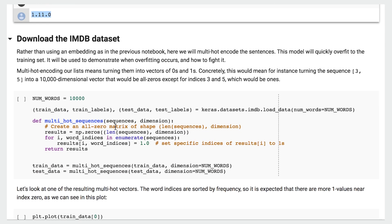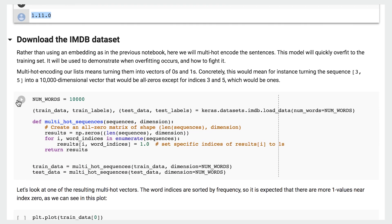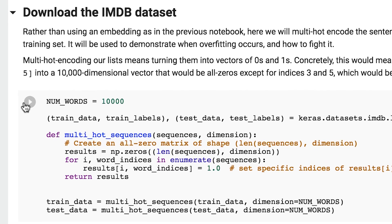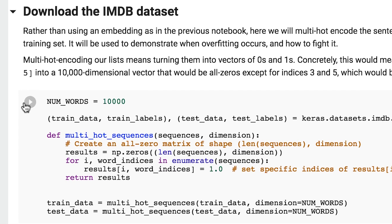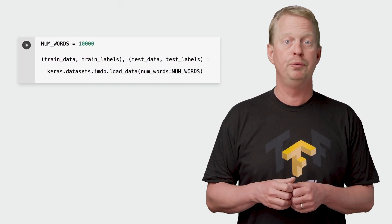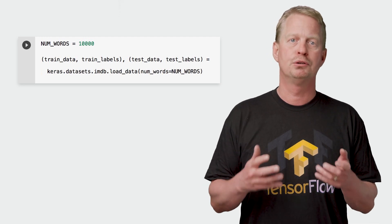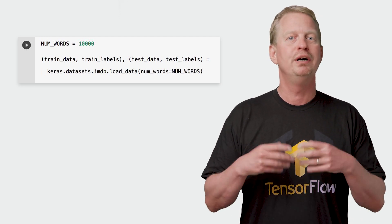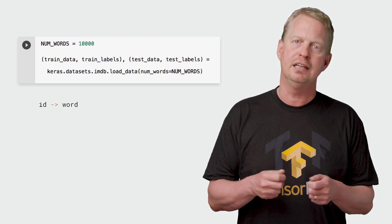Now loading the dataset into the train and test tuple pairs. The num_words parameter specifies the maximum number of words we should consider. Remember from the text classification video, we don't actually get the movie reviews as English words, but rather as a set of numbers, where each number is an ID of a word.